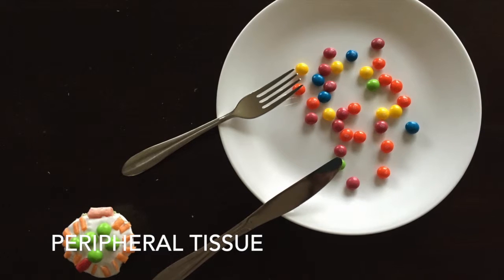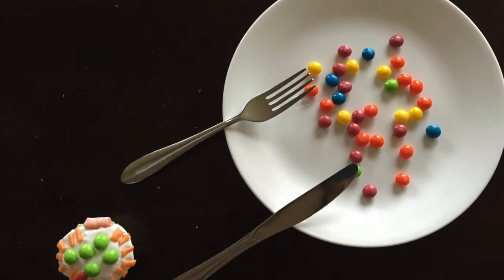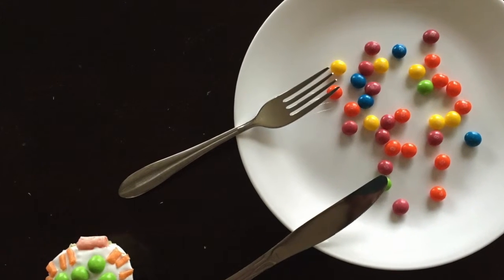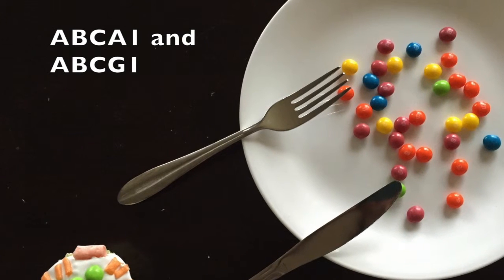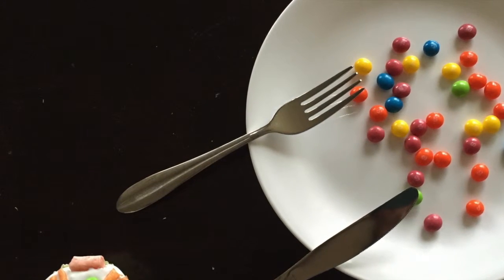Once nascent HDL reaches peripheral tissue represented by our dessert plate, cellular efflux of cholesterol occurs via two transporters. First, our fork represents transporters ABCA1 and ABCG1, which promote cellular efflux unidirectionally.